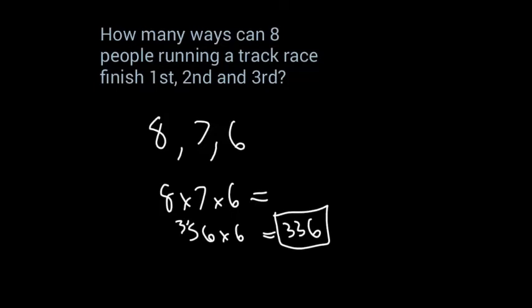So if you ever see this, this is called a permutation. And it's written as eight people permutated in three spots. We'll do another example too before I explain that.